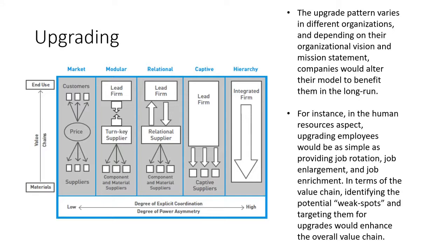In terms of value chain, we are identifying the potential weak spots and targeting them for upgrades. If we look at the chart from left to right, in the market we have a fixed or specific price that has been set, and we provide it to the customers and suppliers. It's easy for them to gauge, which is why it has a lower degree of explicit coordination, less control, and less managing.